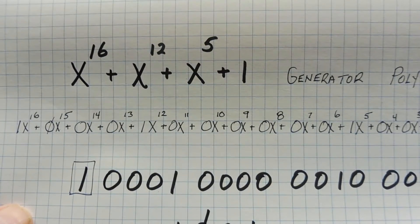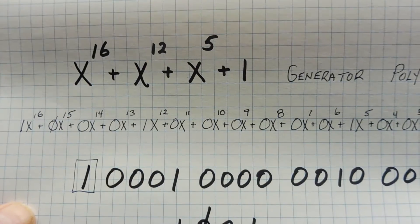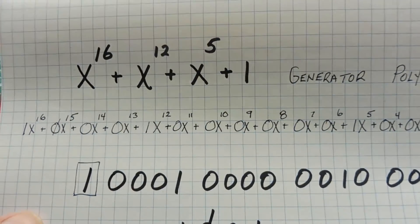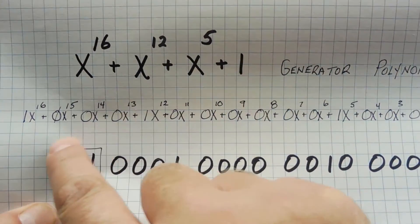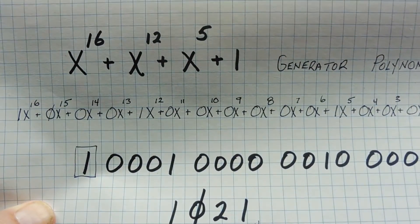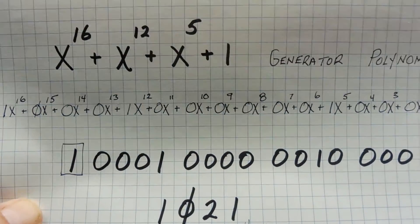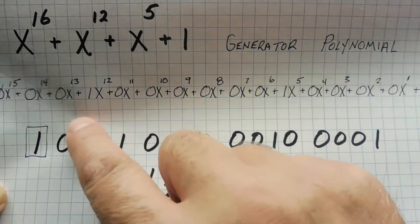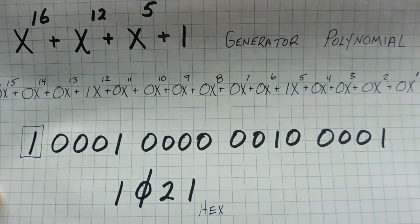So the first thing we do with that polynomial, we expand it, and we bring out all the coefficients. And you can see there on the second line, I brought out all the 1 and 0 coefficients. And if you bring them all down, it forms a 17-bit binary number.